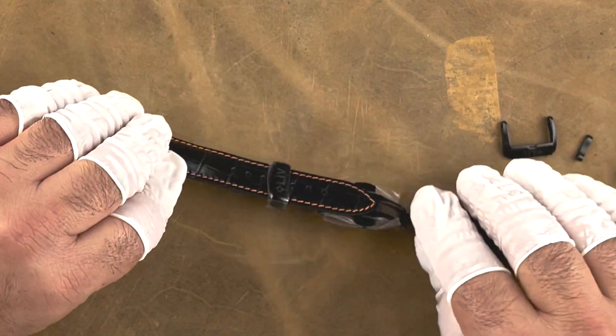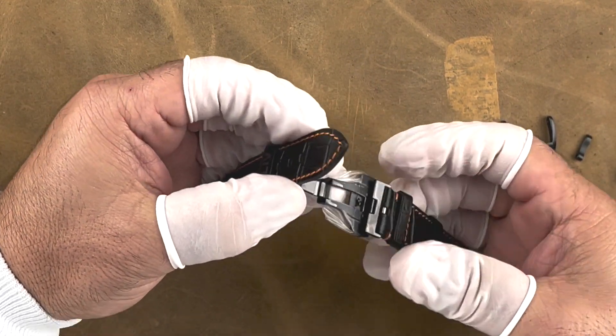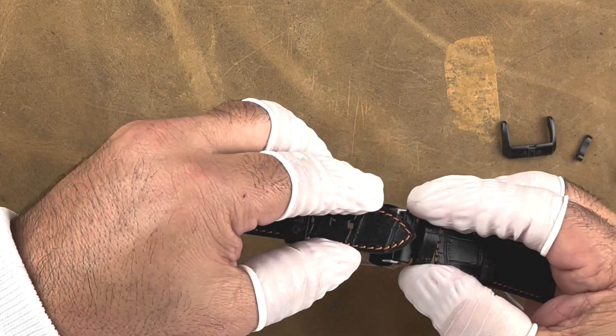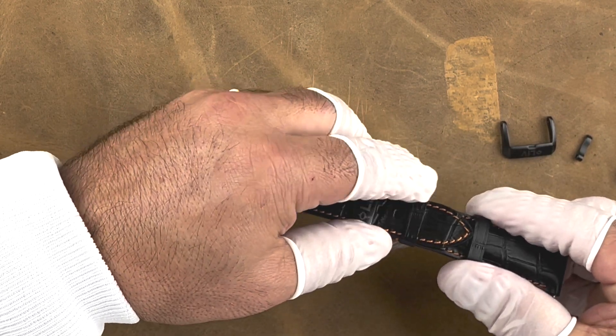Close up the clasp, make sure it's secure, and voila, you are done. You now have a beautiful deployant clasp on your leather strap.